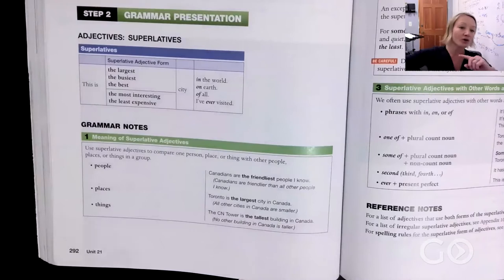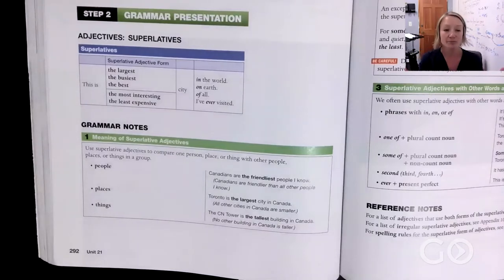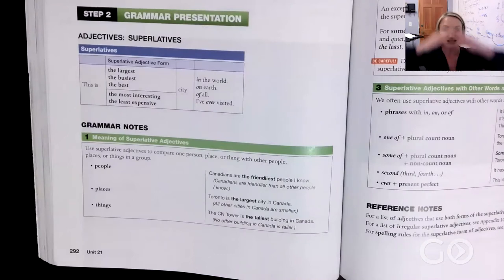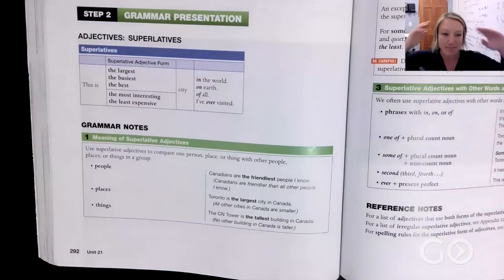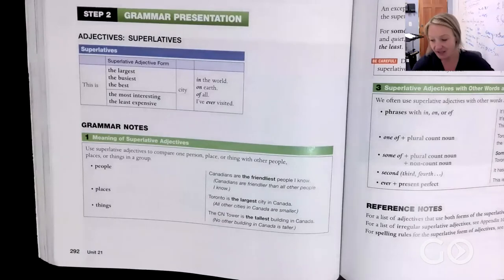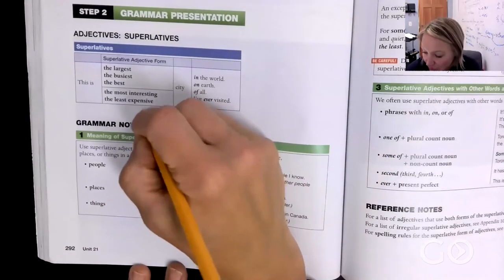So it's a three or more comparison. It's the biggest, it's the tallest, it's the best. You're going to take large and you're going to say largest, adding -est.